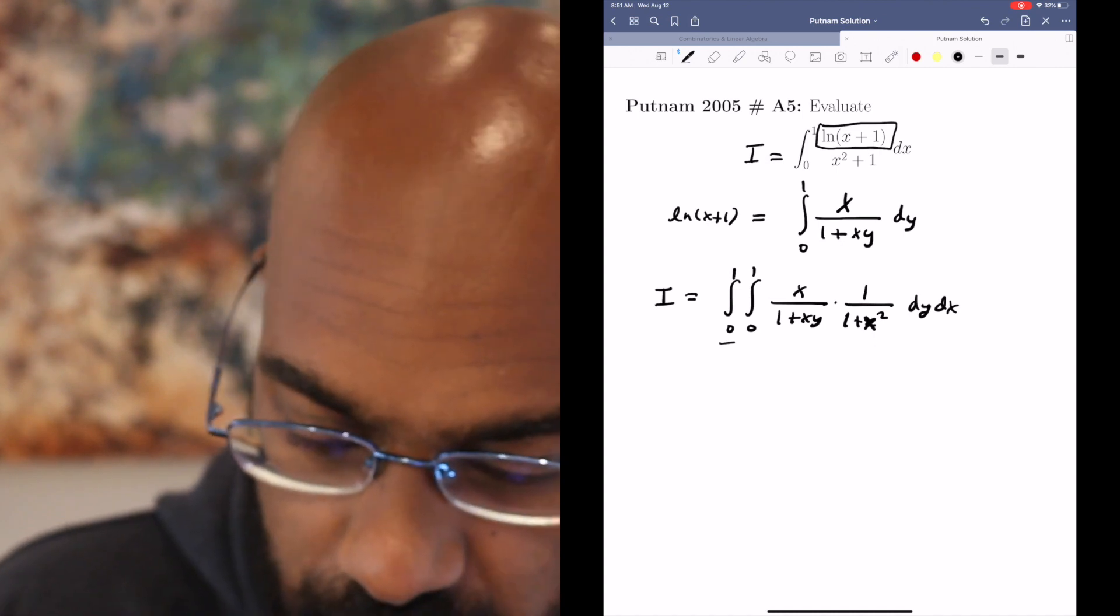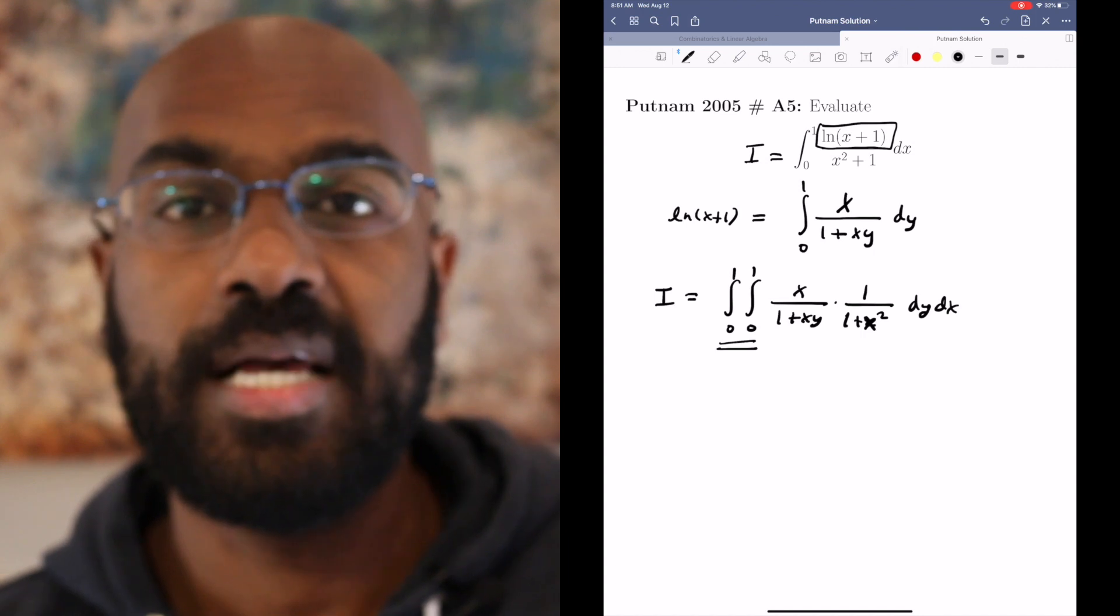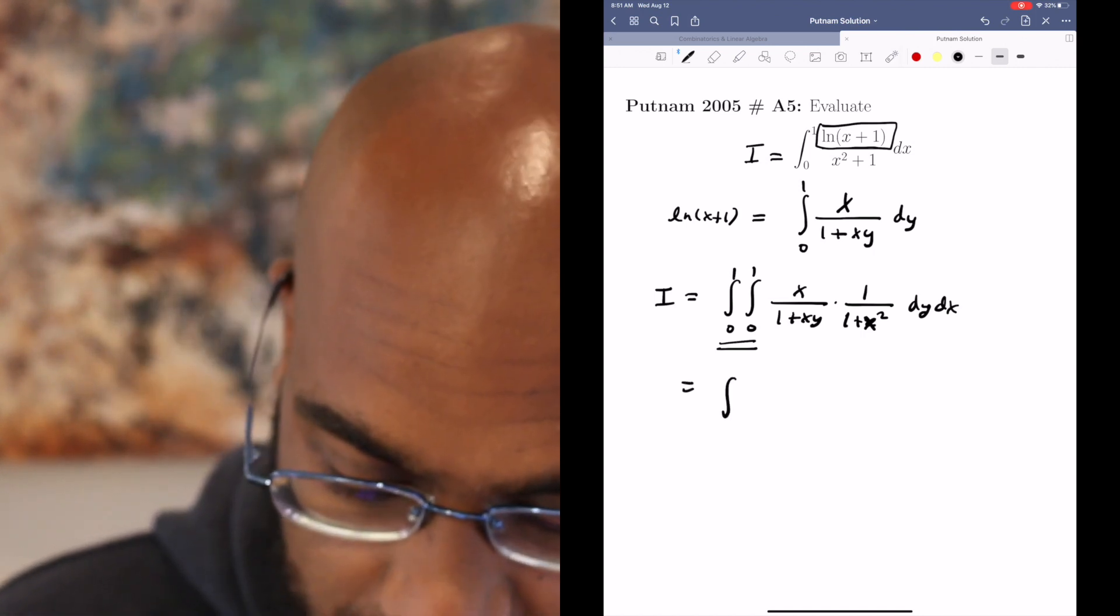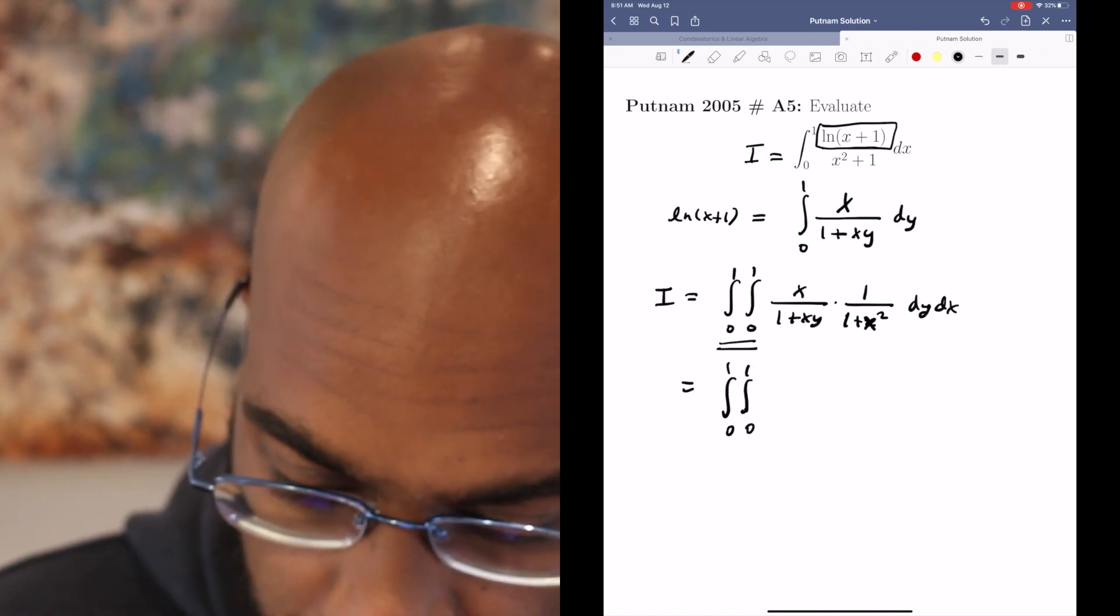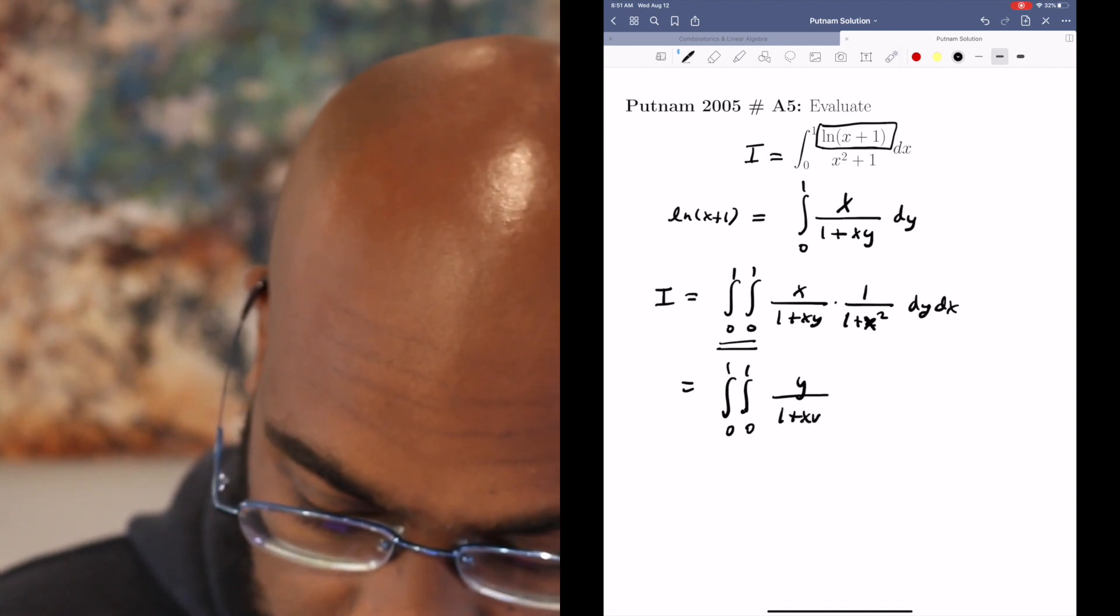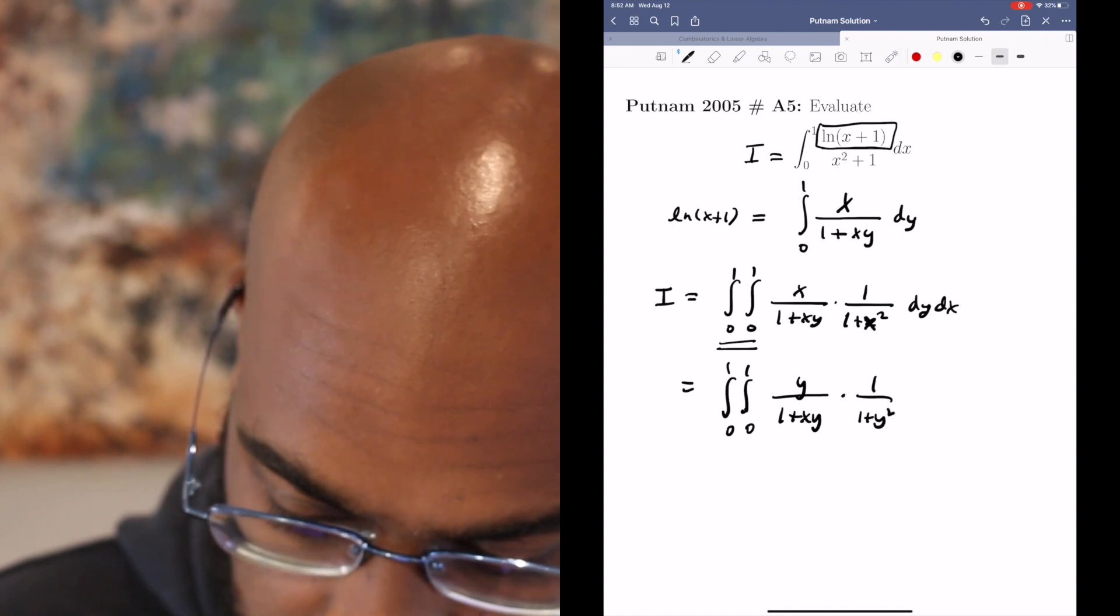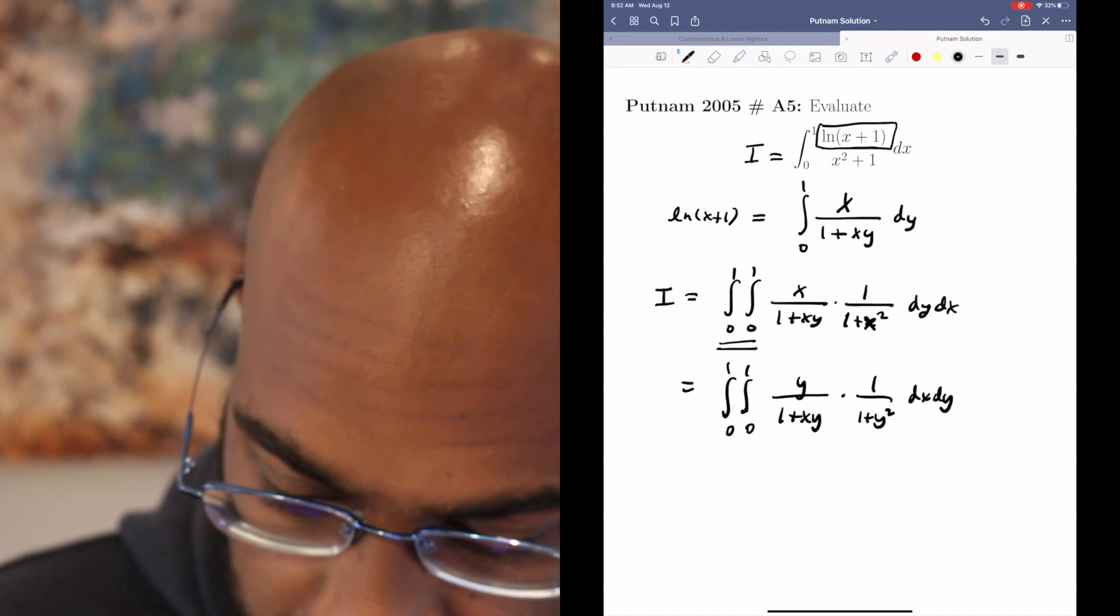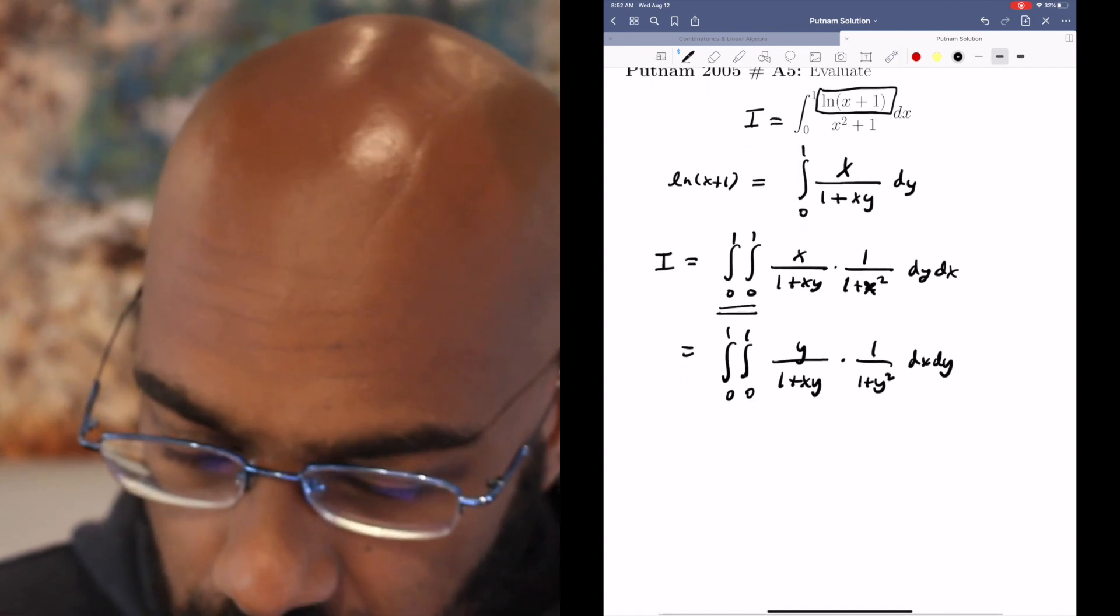First of all, we're integrating over a square whose side lengths range over the same values. So we can interchange x and y here, and if we do so, we'll get the same integral. We'll get y over 1 plus xy times 1 over 1 plus y squared dx dy, which is the same as dy dx.